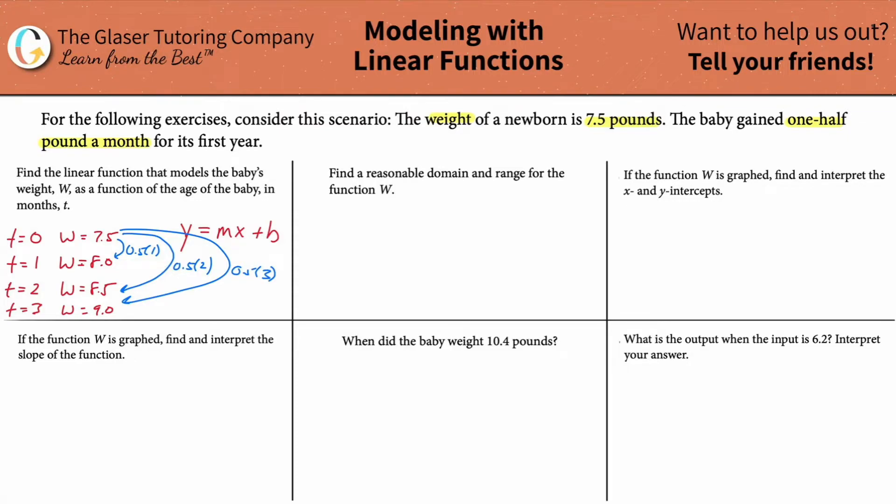Then what you could have done was you took 0.5 and now multiplied it by two months. That would have given you a value of one, and then you added that to 7.5 to find 8.5. And you might see now what you would do here to get to the 9.0. You would take the 0.5 and multiply it by three. So guess what? This is the equation. This is now the linear formula.